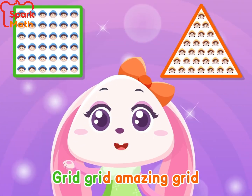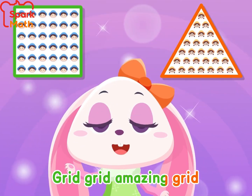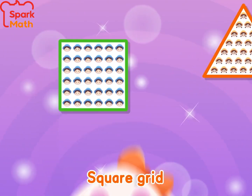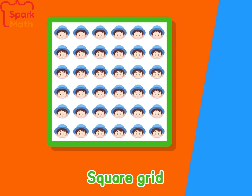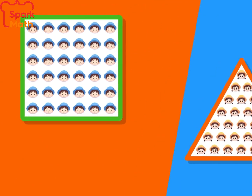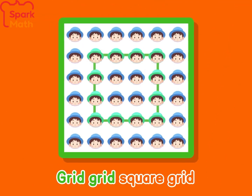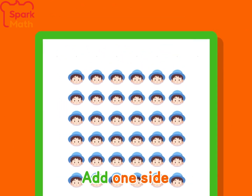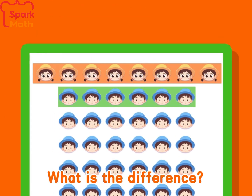Great, amazing — great square and great triangular! Great square: add one side — what is the difference?